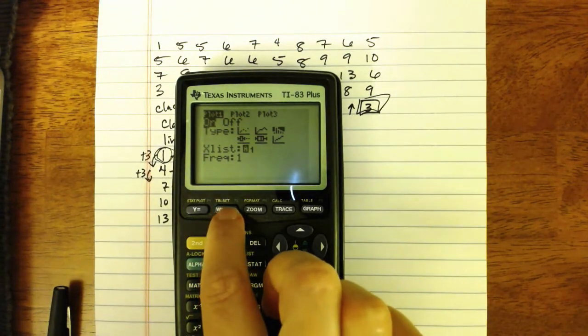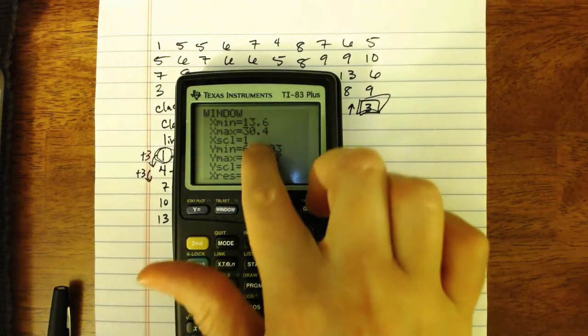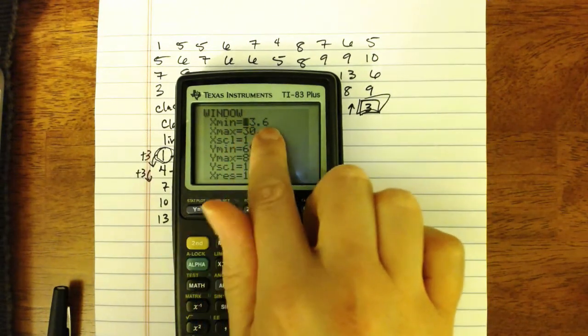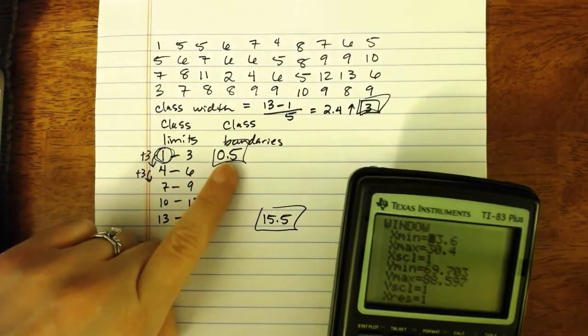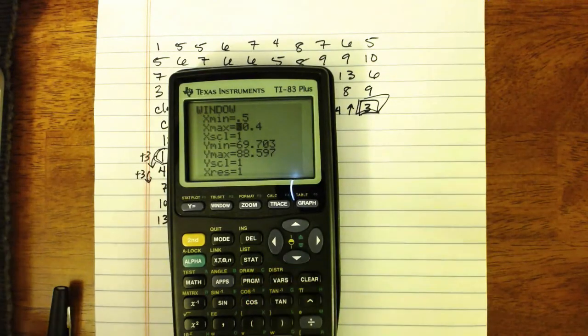To do that, press the window button, and this is where you need to know some information from your frequency table. For example, you want to set your X min to your lowest class boundary, which was 0.5. So we'll set that to 0.5.